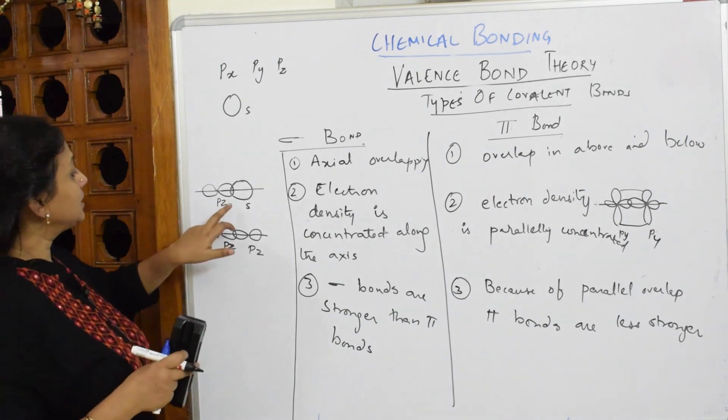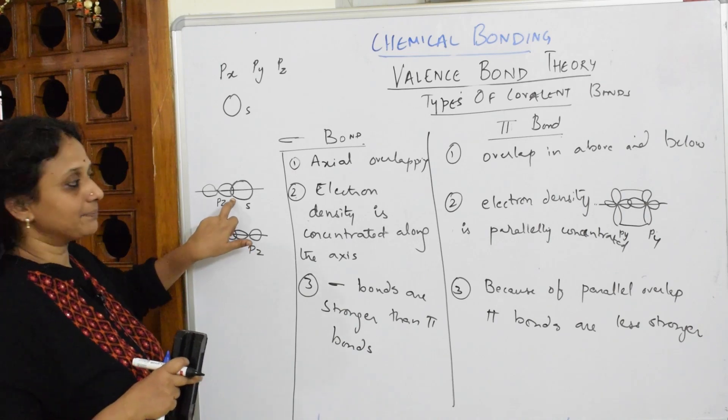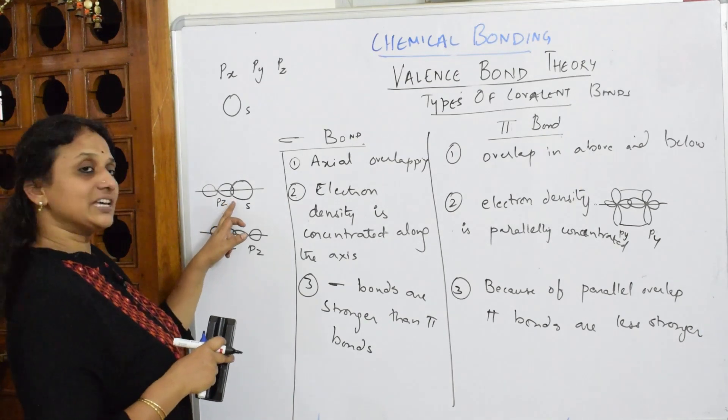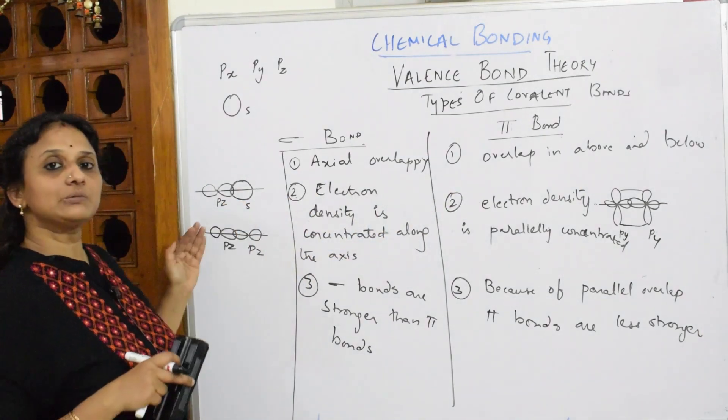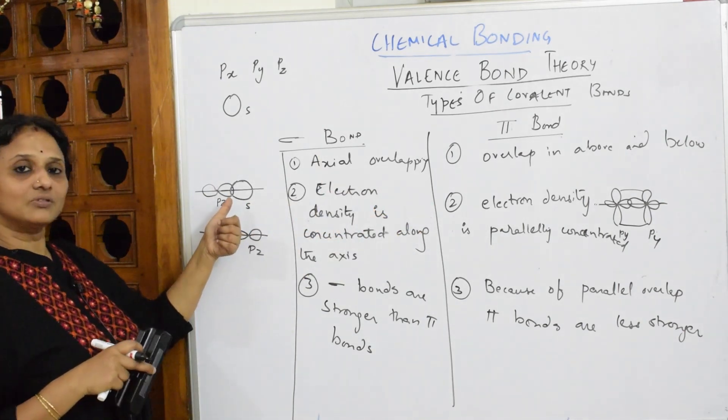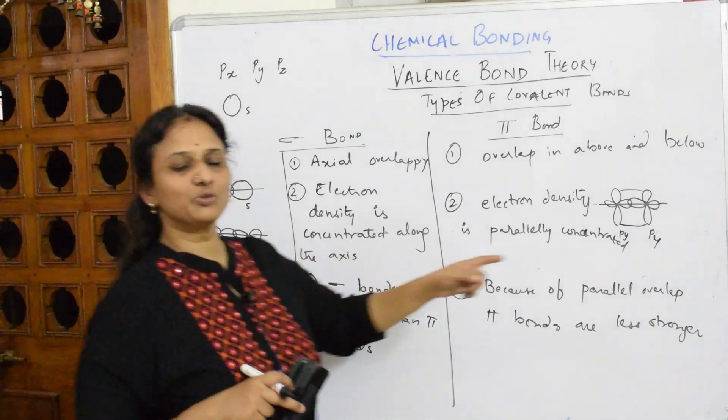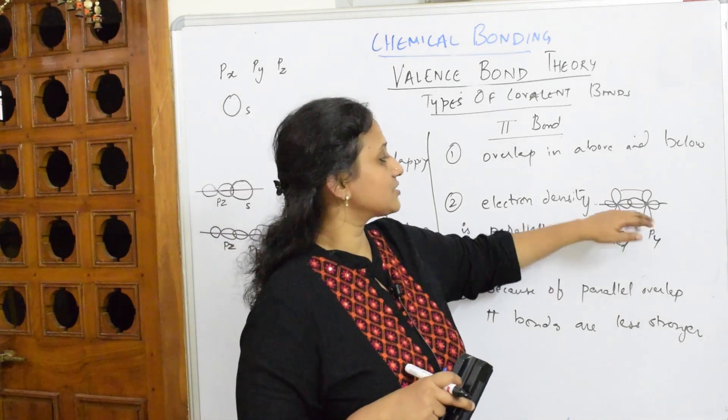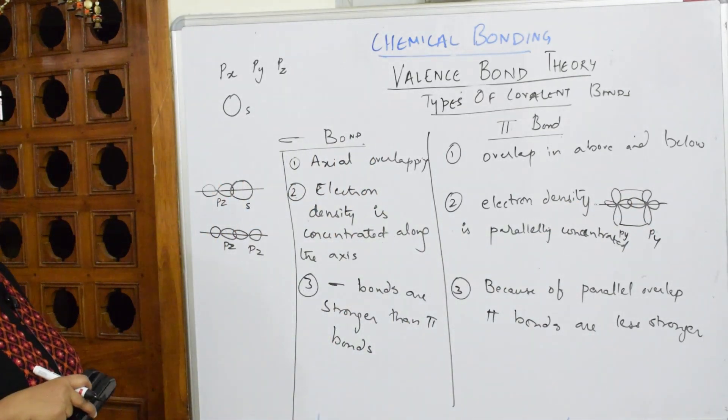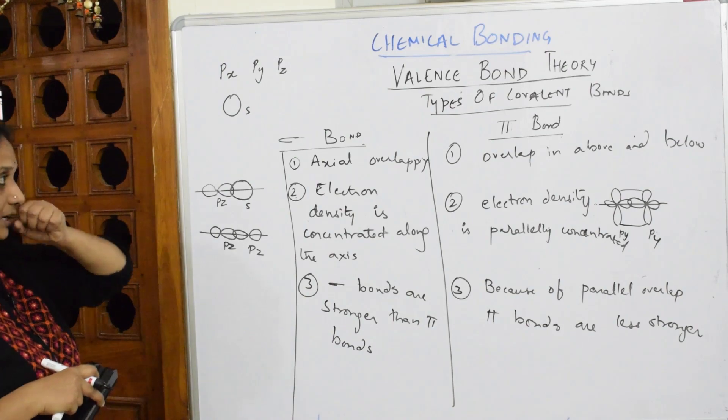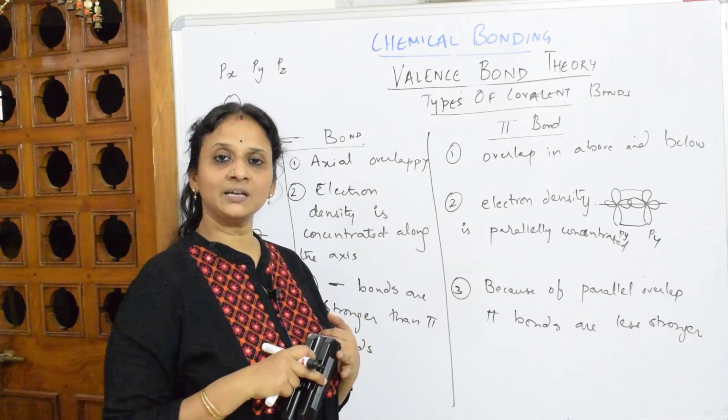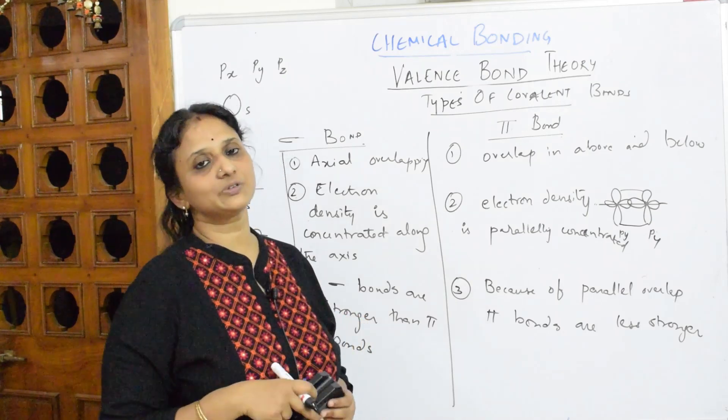When I speak about this particular example, the repulsion will be more in that or attraction will be more in this. This is more attractive in nature. Here this is sigma stronger but here the repulsion is more. So know these points. For sigma and pi bonds, you can pick up overlap. Your VBT theory explains about hydrogen atom, type of overlapping, and the differences between sigma bond and pi bond.